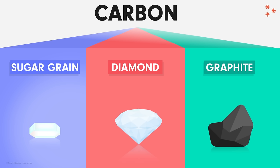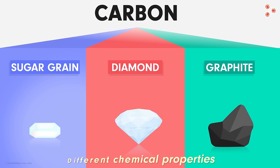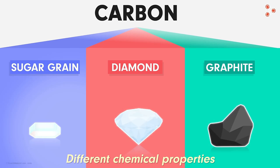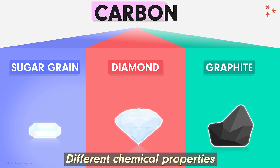But how can there be so much difference in the looks of different materials made up of the same element? How can substances made up of the same element carbon appear totally different? And they also have different chemical properties — the looks are different, the chemical properties are different — but they are made up of the same element, carbon.